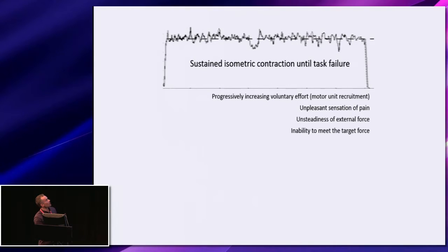But it's concealed because the task here, these are data from an older man holding a sustained isometric knee extension at 50% of maximum force. The fact that the task is to hold the contraction for as long as possible to match the target force conceals the changes that you can see to external force that were evident in the previous figure.